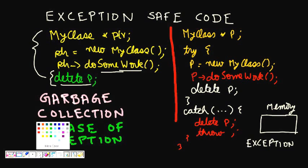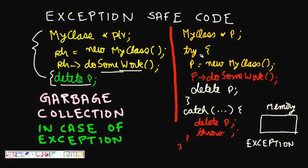One solution is to wrap the code in a try-catch block: MyClass* p; try { p = new MyClass; p->doSomeWork(); delete p; } catch(...) { delete p; }. In the catch block the destructor is called, which frees all resources and clears memory. This handles both the normal path and the exception path.